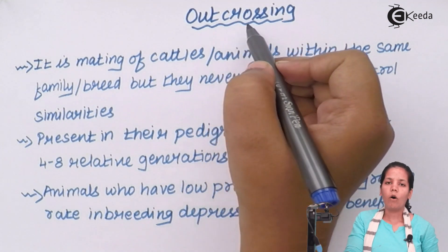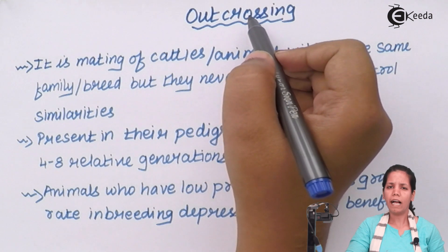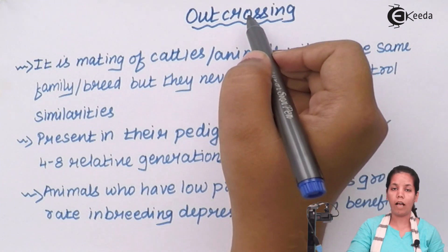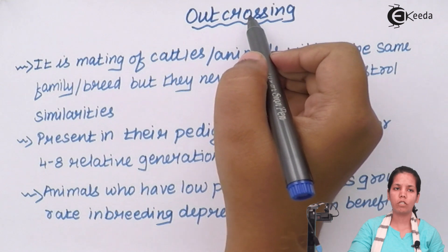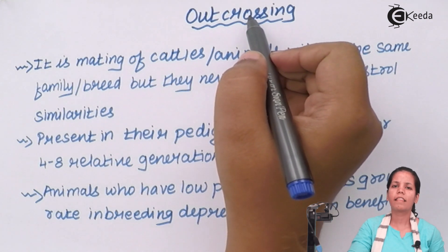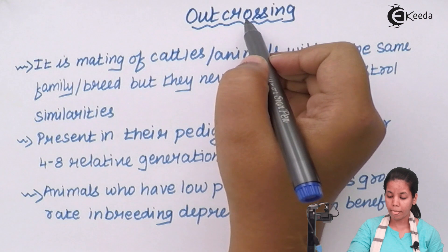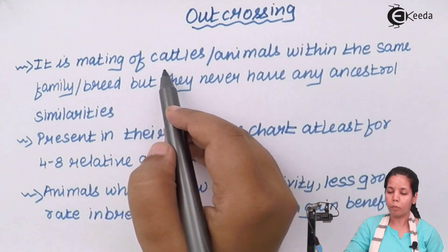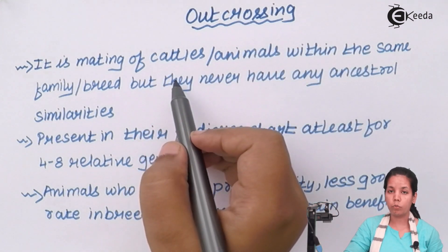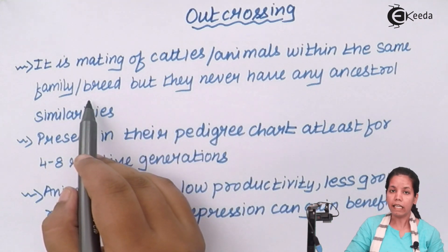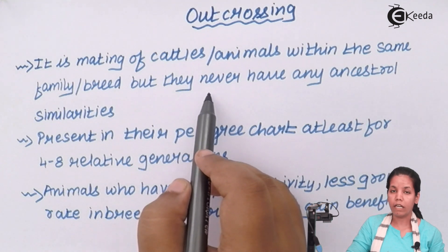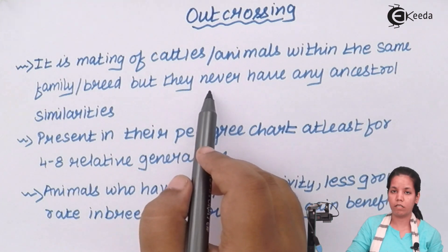Outcross and outbreeding are a little bit similar. In outbreeding also you use two different species which don't have similarity in ancestral properties, but there only one generation of ancestral difference is looked upon. Whereas in outcross, breeding is done with animals of the same family or the same breed, and they should never have any ancestral similarities.